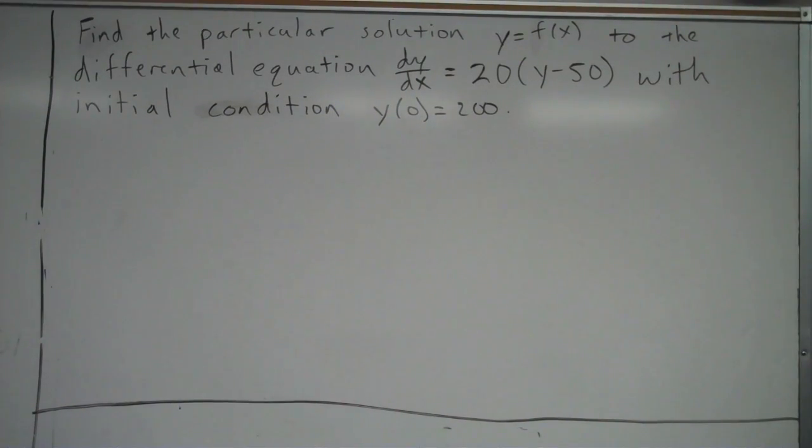All right, let's go ahead and take a look at this question on solving differential equations. I've worded this very specifically because you're expected to recognize this wording and know what to do. Find a particular solution, y equals f of x, to the differential equation dy over dx equals 20 times y minus 50, with initial condition y of 0 equals 200.